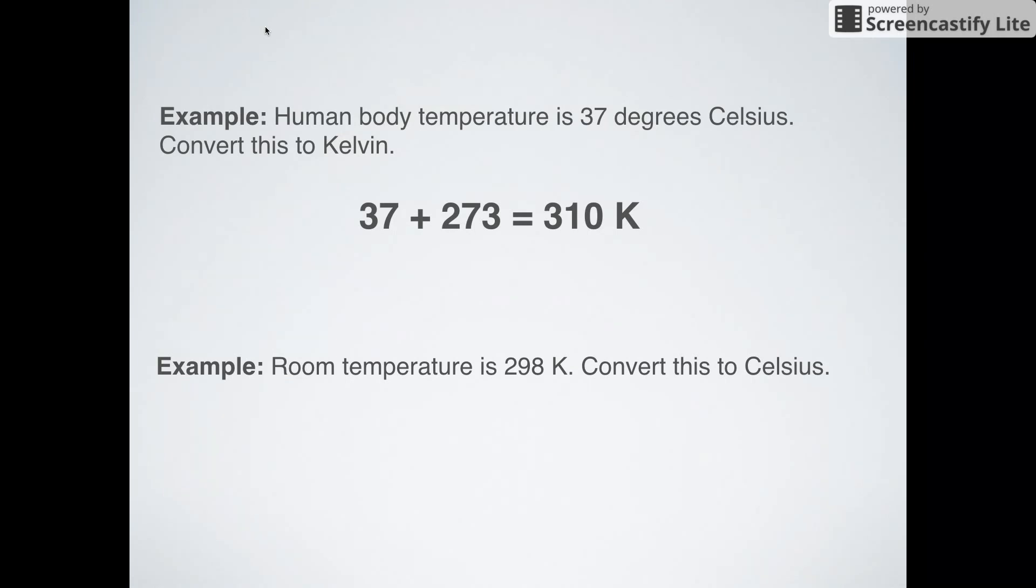What about room temperature going the opposite direction? If I say room temperature is 298 K, what is that in Celsius? All I've got to do is subtract 273 to get to Celsius. Think about it logically. Celsius is going to be a very low number always, and Kelvin is always going to be higher. So if I want to get to Kelvin, I add 273. If I want to get to Celsius, it's going to be lower, so I subtract 273.